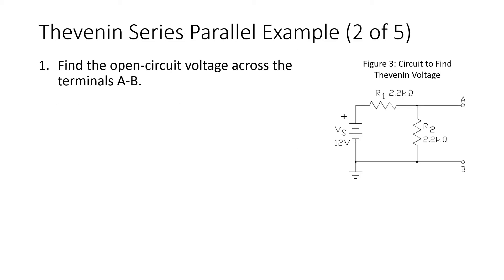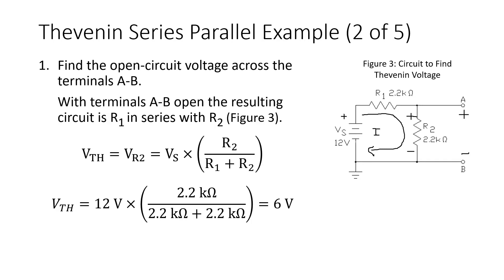Step 1 is to find the open-circuit voltage across terminals A and B. With terminals A and B opened, there's only one path for current: the source voltage only sees R1 and R2 in series. Whatever voltage is dropped across R2 will also appear across terminals A and B. So the Thevenin voltage equals the voltage across R2, calculated using the voltage divider formula: V_source times R2 over R1 plus R2, which gives 6 volts.